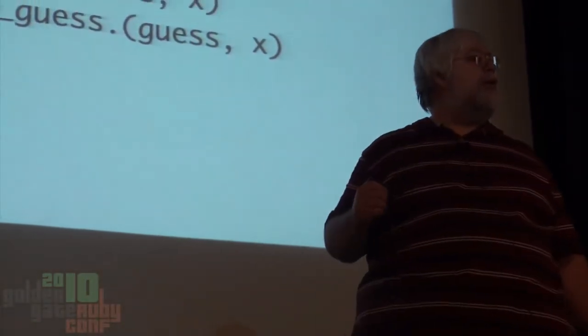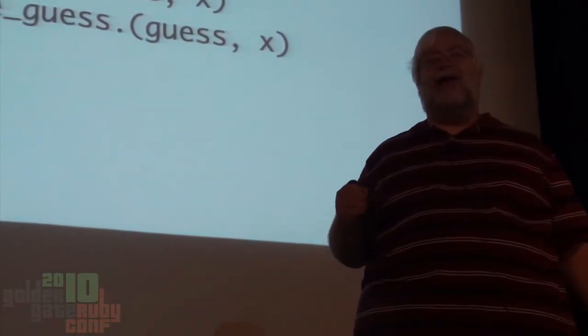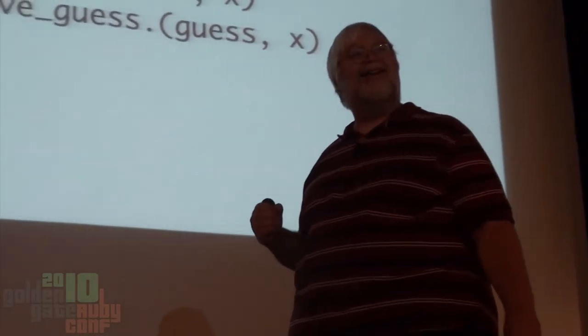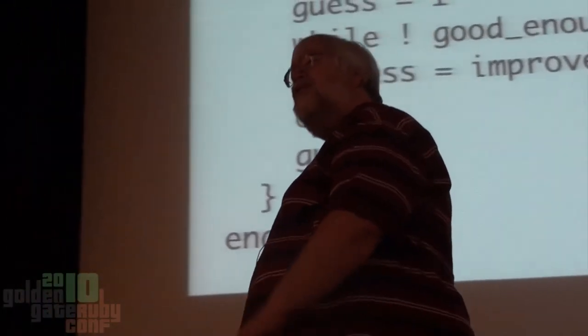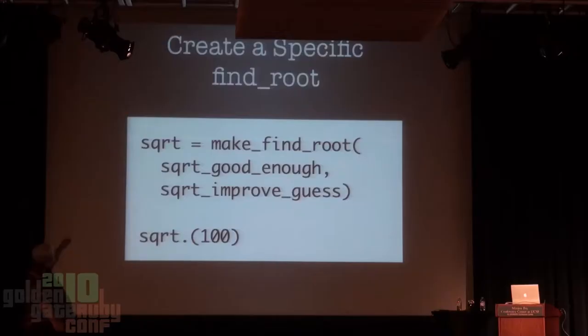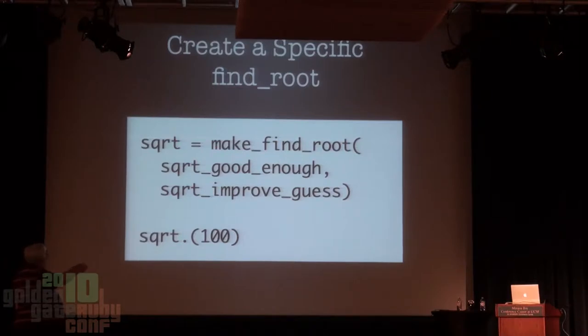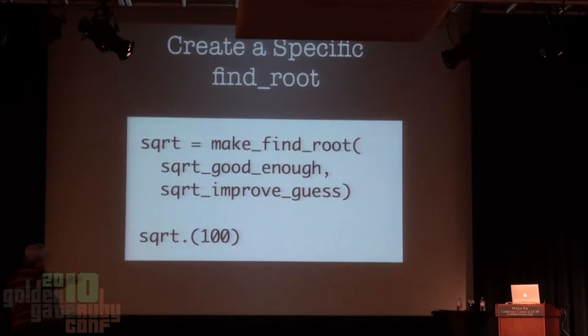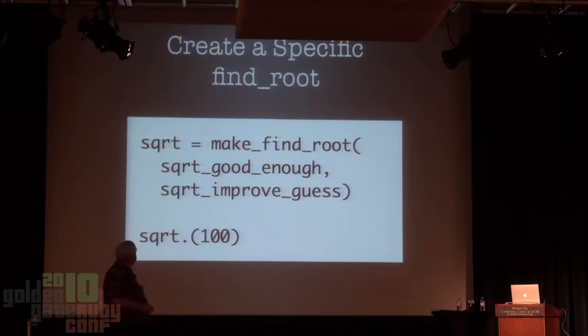We have constructed on the fly a function-building function that will construct a function that will find the root for us, given the proper good_enough and improve_guess methods. Just think about that—we are building functions on the fly. We would use this like this: we have a square_root variable, and we assign to it the return value of make_find_root passing square_root_good_enough and square_root_improve_guess. Then we can call square_root on 100, just like we did before. We've got the nice convenience, but wrapped the whole thing into function-building procedures.